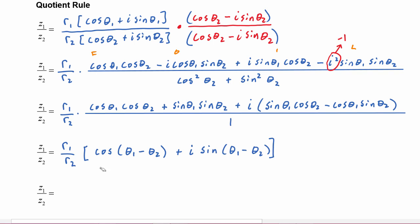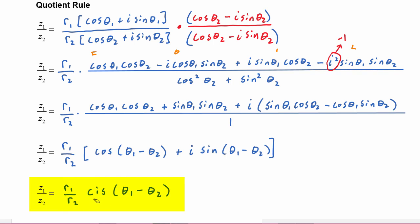This is the trig form, and we can write it in its simplest form as r1 over r2 cis(θ1 − θ2). So to divide two complex numbers, we just divide their radii and subtract the angles. This is the quotient rule.